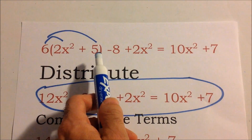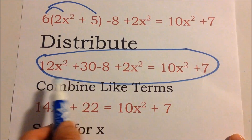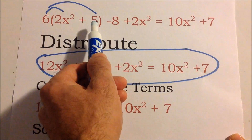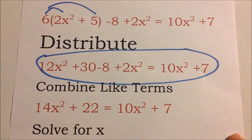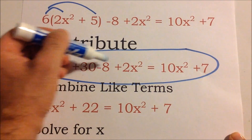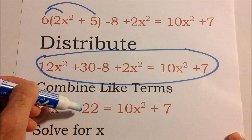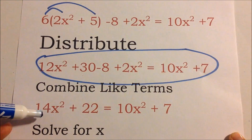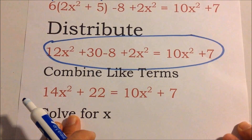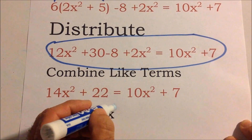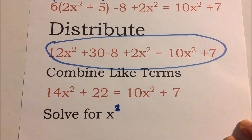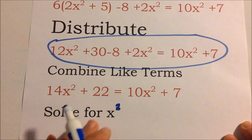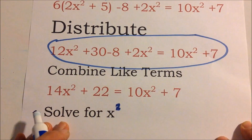Remember: 6 times 2 is 12, giving 12x squared; 6 times 5 is 30. Combining like terms: 30 minus 8 gives 22, and 12x squared plus 2x squared gives 14x squared. We're solving for x — since we have x squared, we need to find that first. Because it says x squared, this is not a linear equation.